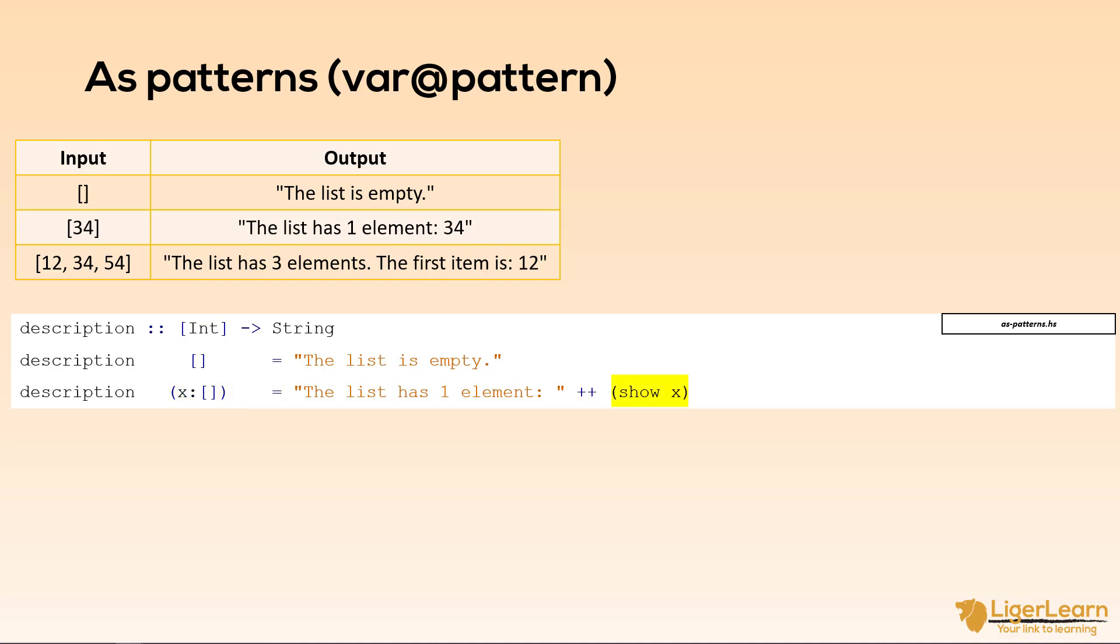We call the function show x to convert the first and only item in the list from int to string and we use the concatenation operator to join the two strings, the one on the left and the one produced by the call to show x, to get our final string.